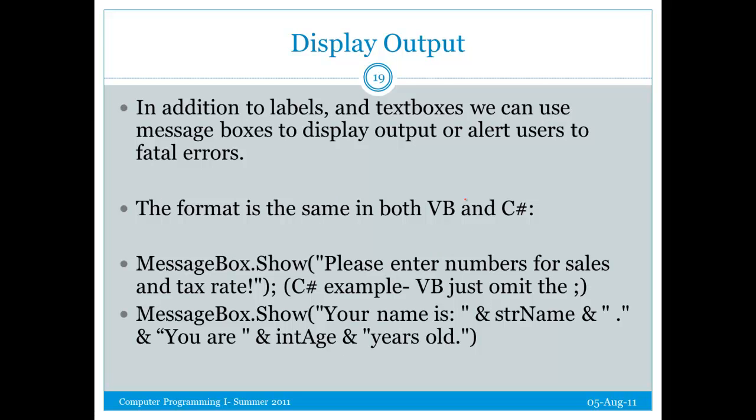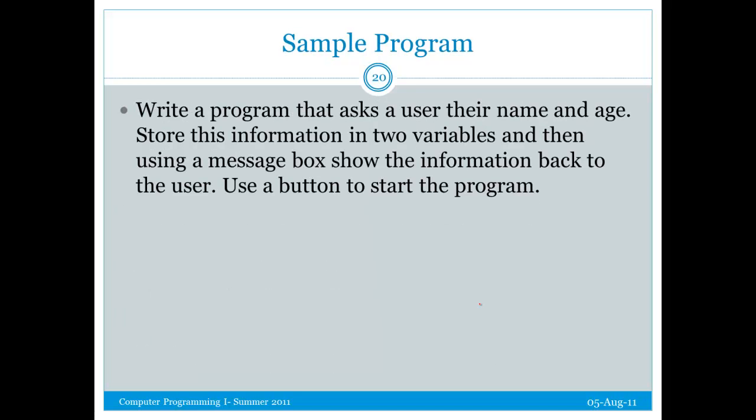Now we can use labels, text boxes, list boxes, and other things to output data. But we can also use a message box. A message box pops up a box on the screen and stops the execution of the program until the user clicks OK. For example, we can say please enter the numbers for sales and the tax rate. We can give the user a message if they produced bad input. Or we can give them a message and notice concatenation going on here. We can have some text, a variable, some more text, another variable, and some more text. Remember, the text will be displayed as written. The variables, the value of that variable will be displayed.